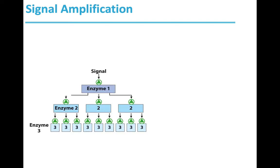The epinephrine cascade results in signal amplification. This means that a signal can be amplified into various signals. For example, one signal activates enzyme 1, enzyme 1 activates three molecules of enzyme 2, and a molecule of enzyme 2 further activates three molecules of enzyme 3, and so on. This amplification is a characteristic property of the epinephrine cascade.